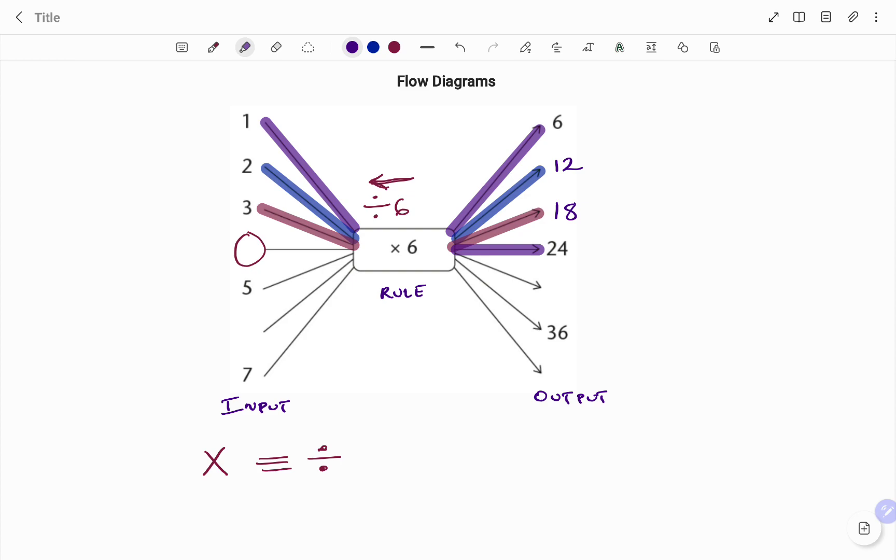And 24 divided by 6 will give you 4. So therefore my original input will be 4, and if you check, 4 times 6 is equal to 24.